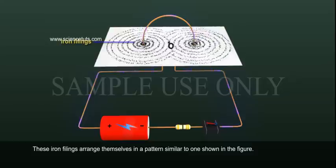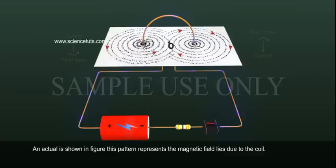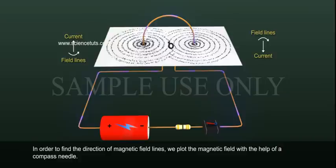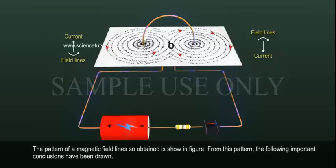These iron filings arrange themselves in a pattern similar to one shown in the figure. This pattern represents the magnetic field due to the coil. In order to find the direction of magnetic field lines, we plot the magnetic field with the help of a compass needle. The pattern of magnetic field lines obtained is shown in the figure.